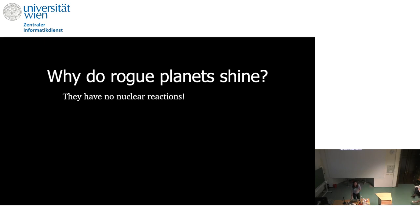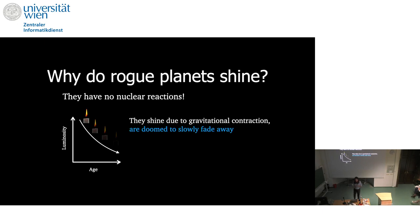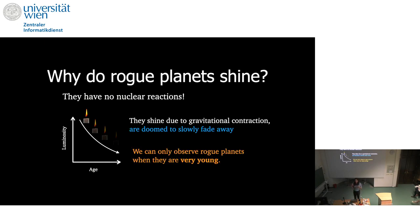The level is really high in this room. So they contract — this is what gives them energy. And there is a related consequence: every time they contract, they have less and less energy, and this means that little by little they fade away. They are brighter when they are younger. So if we want to observe rogue planets, it's best to observe them when they are very young, because they will still be relatively bright.